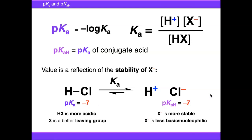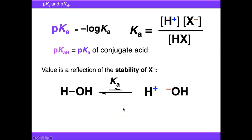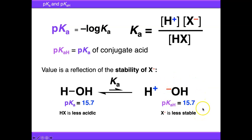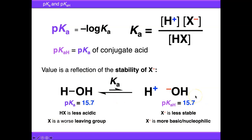If we change X from chloride to oxygen — going from hydrogen chloride to water — the equilibrium is now tilted back towards the left-hand side. This is reflected by the pKa value of water, which is 15.7. This tells us that HX is now less acidic than HCl. The pKaH of hydroxide tells us that X⁻ is less stable — hydroxide is a less stable anion than chloride, a worse leaving group, but more basic and nucleophilic. We know this experimentally: sodium hydroxide is a much stronger base than sodium chloride.